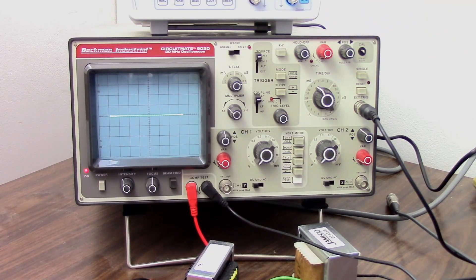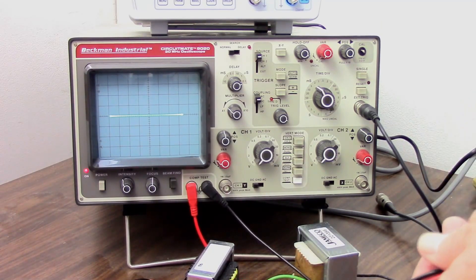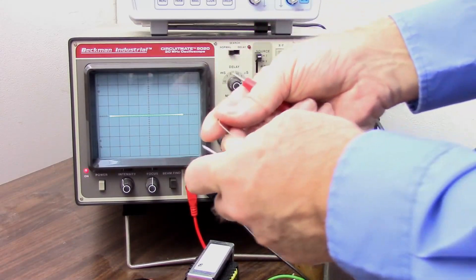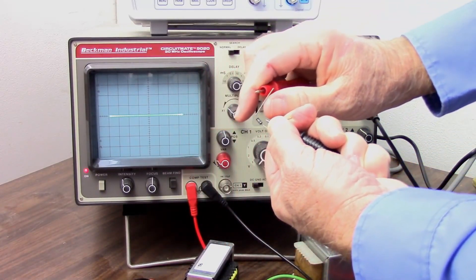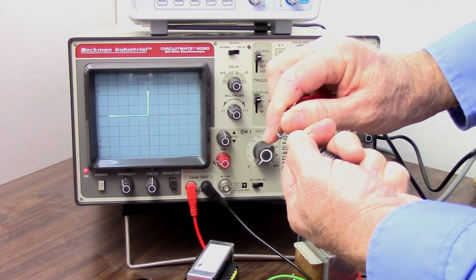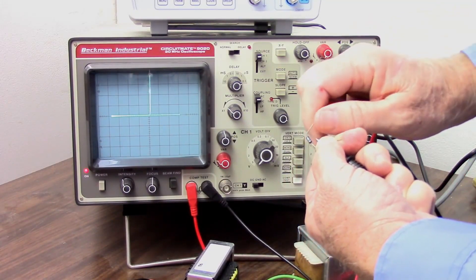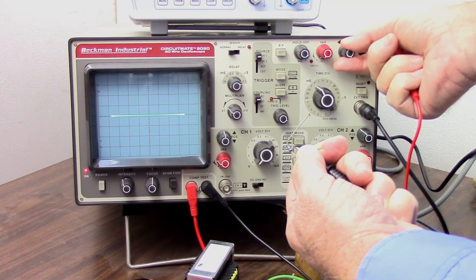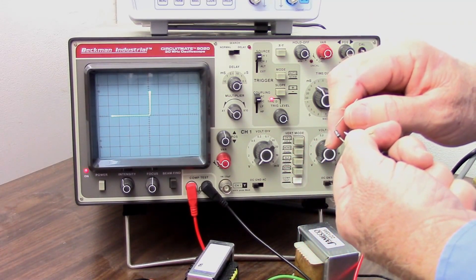And just to see what happens, I'm going to put a diode across these probes. So here is a rectifier diode. And watch the screen. Let's see what happens. Bingo! What does that look like? I'm going to make a slight adjustment to the right here.